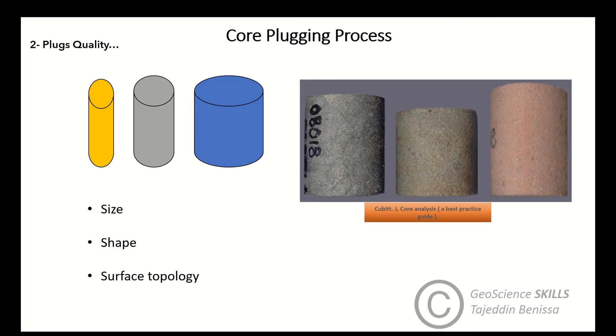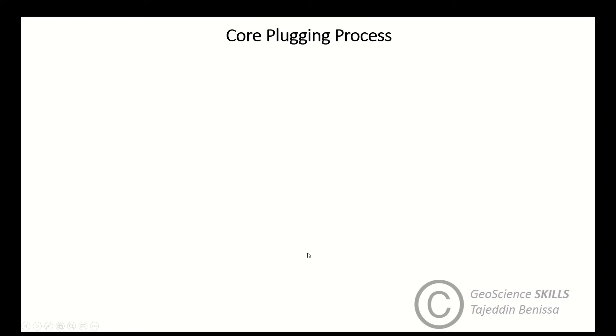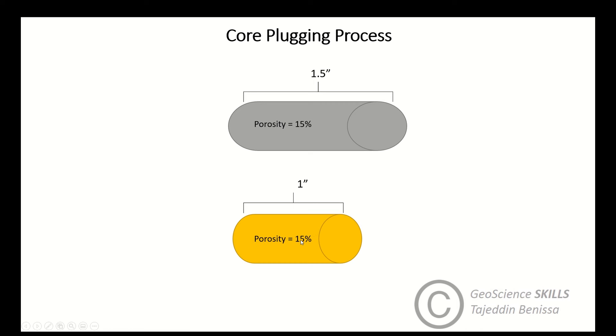Larger plugs are preferred for both conventional and special core analysis, since errors involved in the porosity and saturation measurements on small plugs can be large and can have a significant impact on the data. For example, the pore volume of a standard one and a half inch plug is about four times greater than the pore volume of a typical one inch plug for the same porosity.